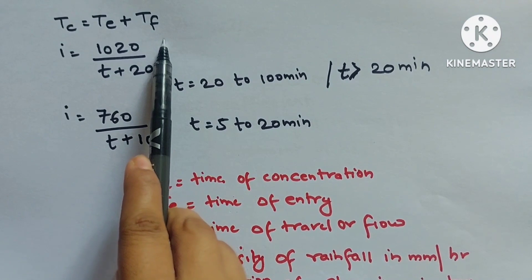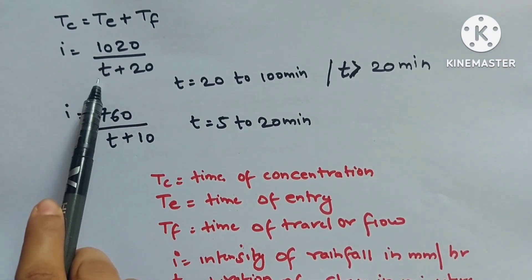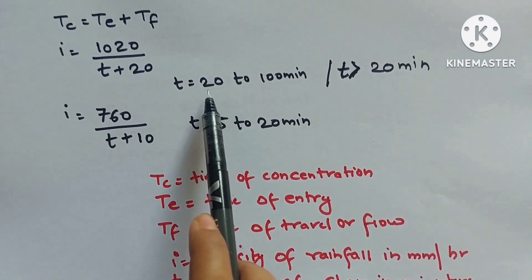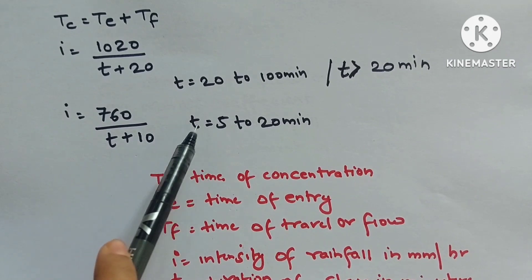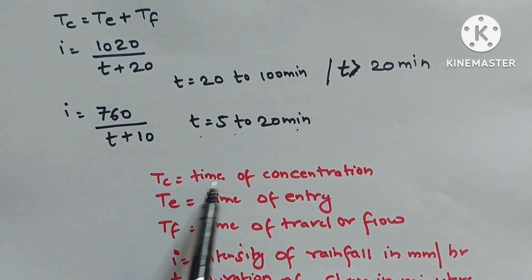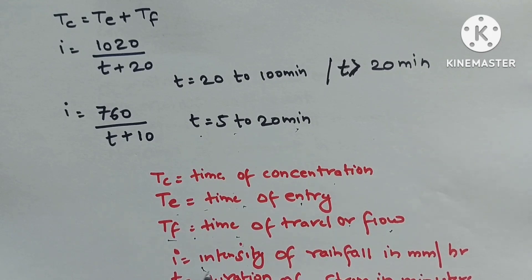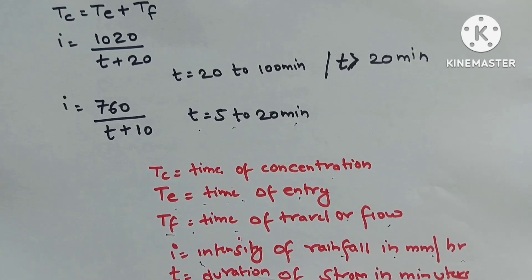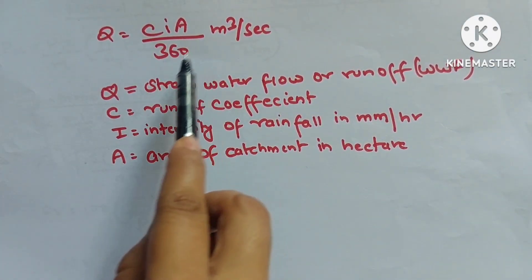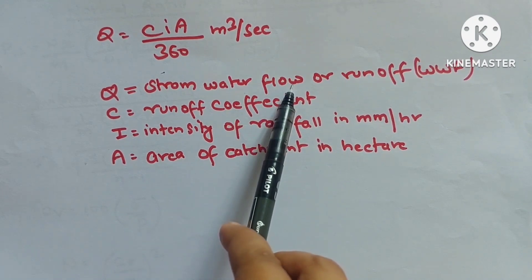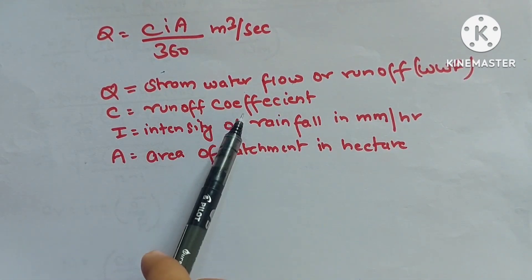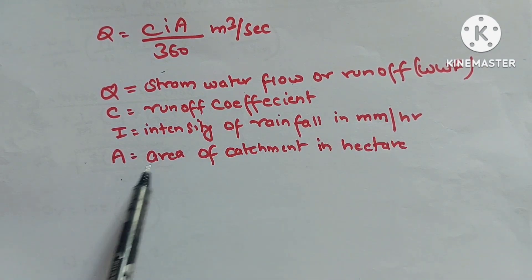Stormwater: Tc = TE + TF. Rainfall intensity I = 1020/(T + 20) for T between 20–100 min; I = 760/(T + 10) for T between 5–20 min. Rational formula: Q = CIA/360 (m³/s), where C is runoff coefficient, I is rainfall intensity in mm/hr, A is catchment area in hectares.